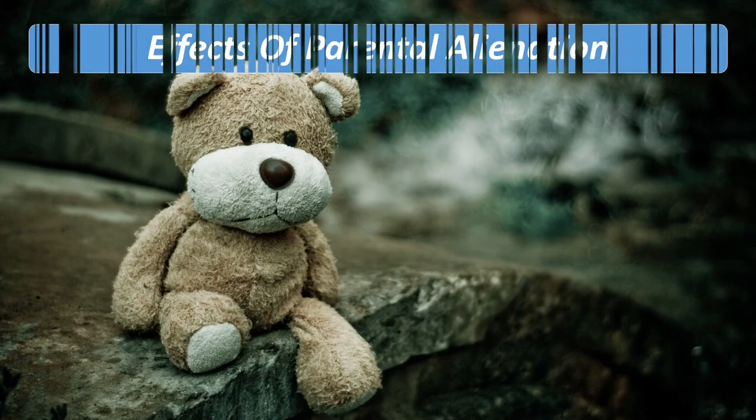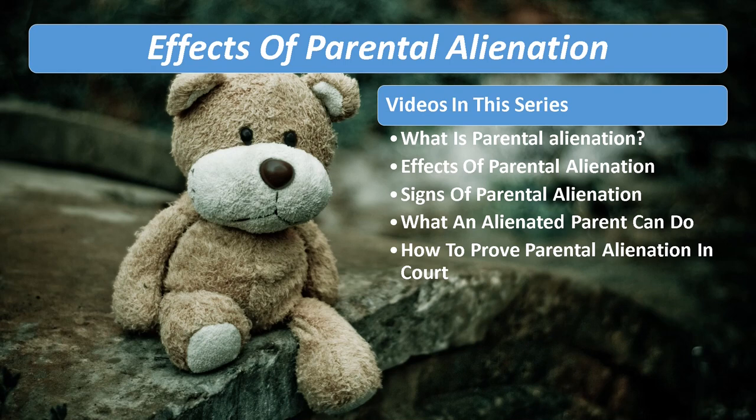In high-conflict divorce cases, it is common for one parent to negatively influence the relationship between the other parent and children, called parental alienation. This is often done through lying, manipulation, coercive control, triangulation, and gaslighting. It can make co-parenting difficult to impossible for the targeted parent, and may cause children to turn against the targeted parent to the point where they no longer want a relationship with that parent.